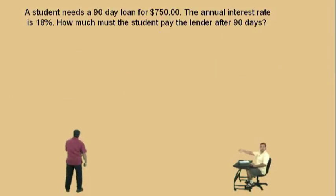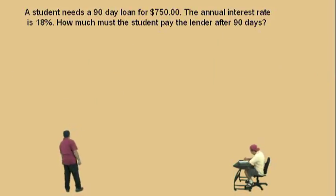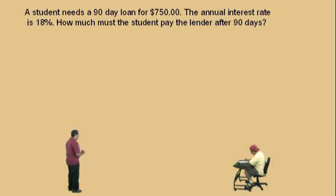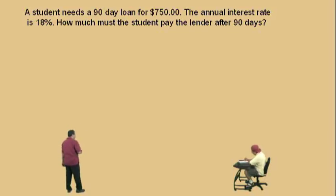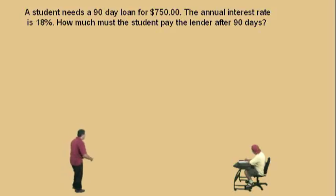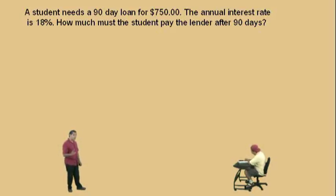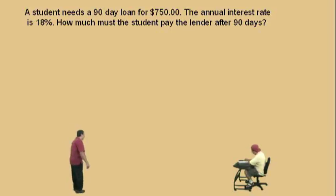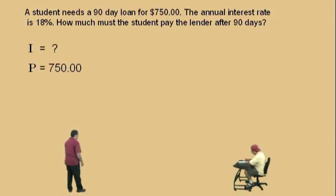Let's do another one. A student needs a 90-day loan for $750. The annual interest rate is 18% — be careful with that. How much does the student pay the lender after 90 days? The student's going to pay off a loan in 90 days, but let's figure out how much he has to pay. He's got to pay some interest plus the amount he borrowed. So we're going to use our simple interest formula. I is what we're going to try to calculate, and the principal is $750.